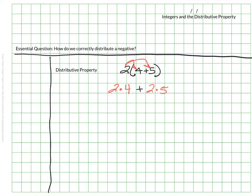Which means this is really the same as saying 2 times 4 plus 2 times 5. And of course if I kept going with that, I would say that's 8 and that's 10 and my total is 18.